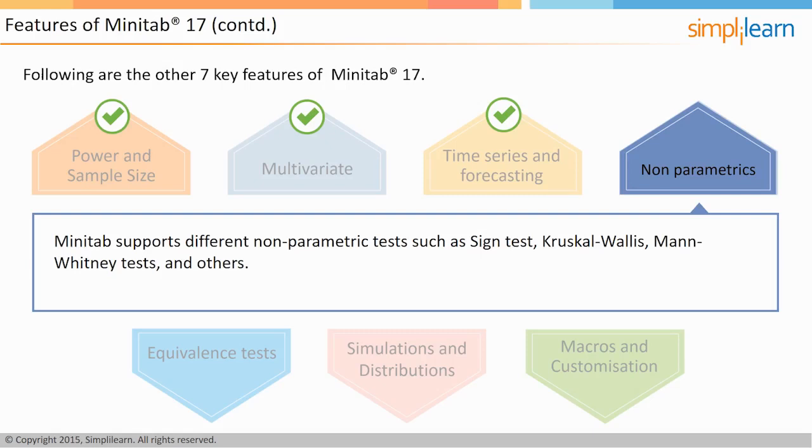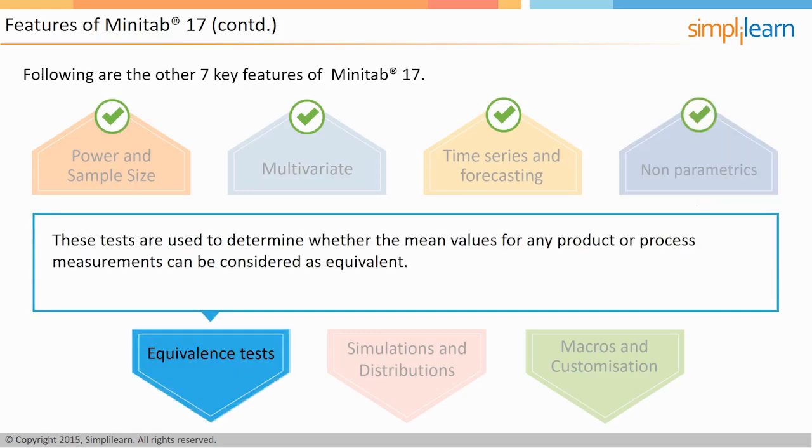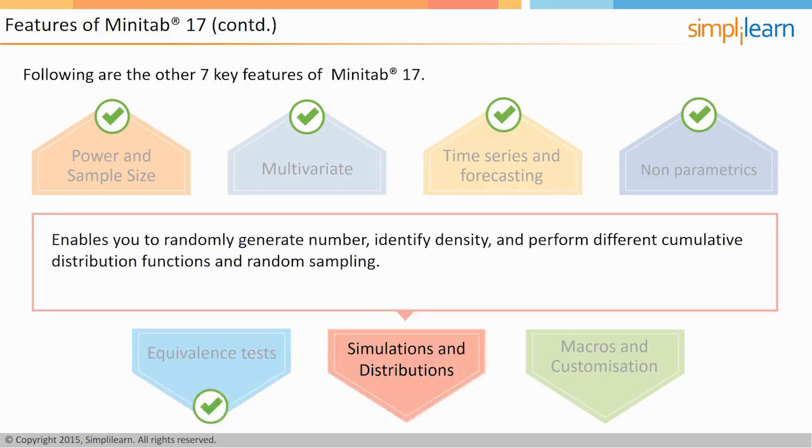Now we begin with the countdown. The number five on our list is equivalence tests. These tests are used to determine whether the mean values for any product or process measurements can be considered as equivalent.